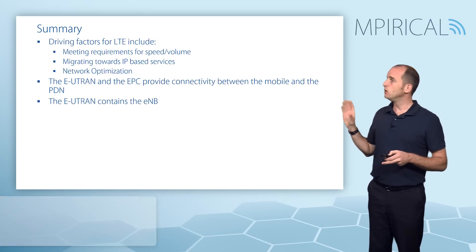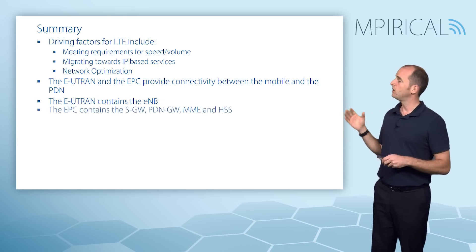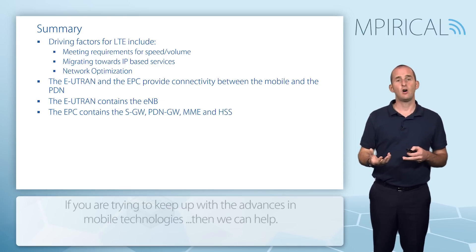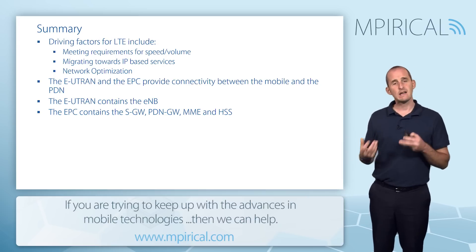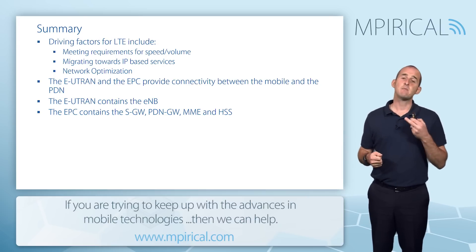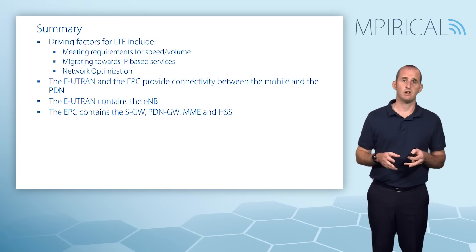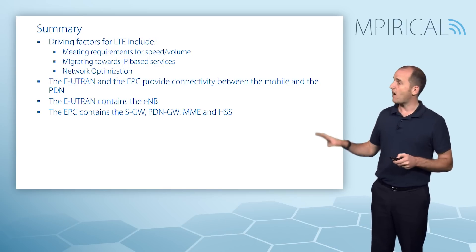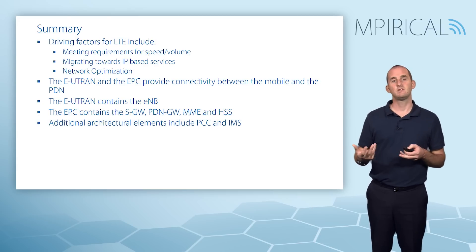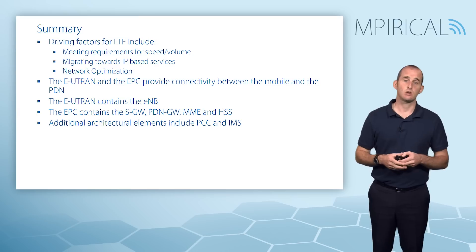We saw that the EUTRAN contained the Evolved Node B, and the Evolved Packet Core contained the Serving Gateway, the Packet Data Network Gateway, the MME (Mobility Management Entity), and the Home Subscriber Server. Finally, we noted that it's not just about LTE — there are other architectural requirements including an IP Multimedia Subsystem and policy and charging control.